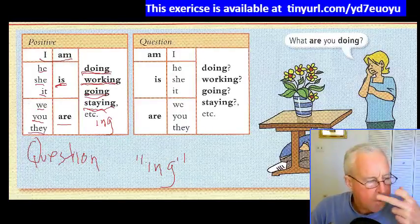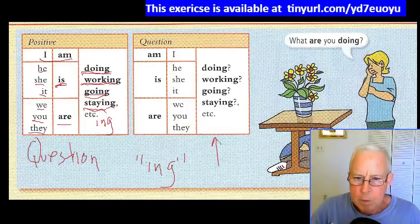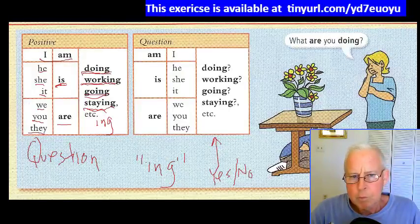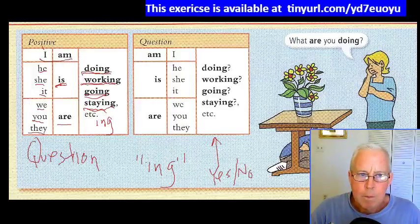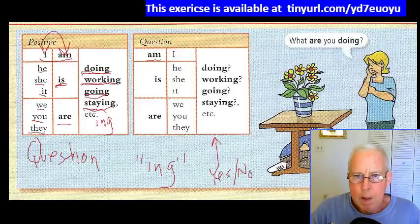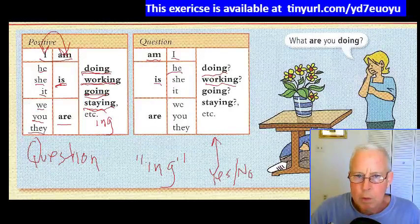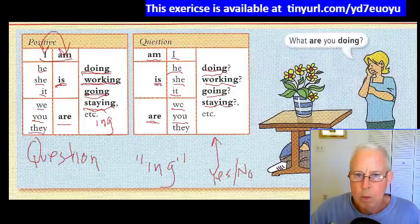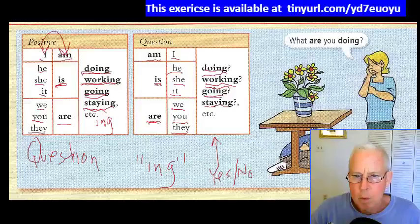Now to make a yes/no question — that's what this box is, yes/no — it's very similar to what we did in the first or second lesson. You just change the order of these two words for the question form. So for example: Am I doing? Is he working? Is she going? Is it staying? Are we doing? Are you working? Or are they going or staying?